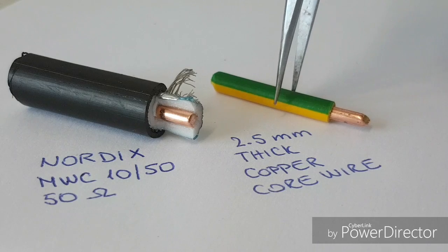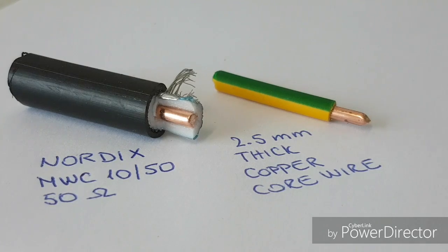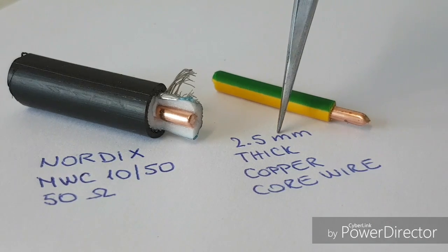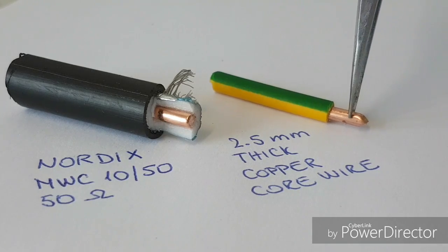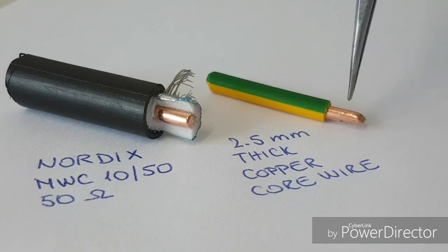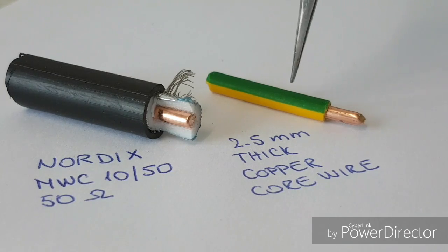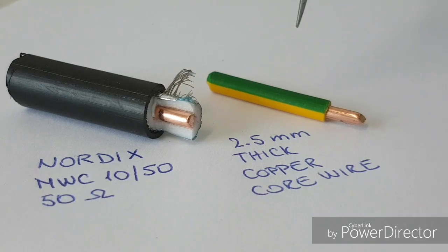For the second loop I'm using this 2.5 millimeter thick copper wire. It's also solid inside. It's also very heavy and holds the shape of the small loop well.